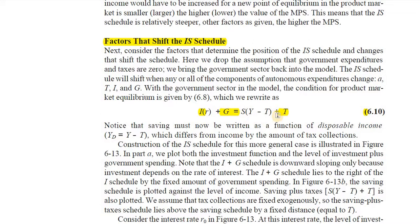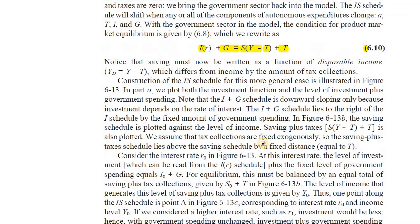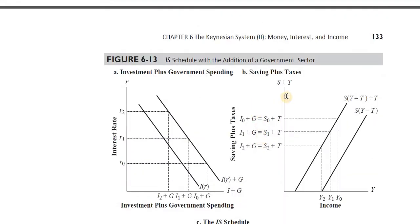Taxes are a very vital component of our economy. Saving becomes a function of disposable income — that is, income minus taxes. Taxes are added to the saving component. Investments plus government expenditure are injections into the economy, and savings plus taxes are withdrawals. The equilibrium condition is: injections equal withdrawals, or I plus G equals savings plus taxes.